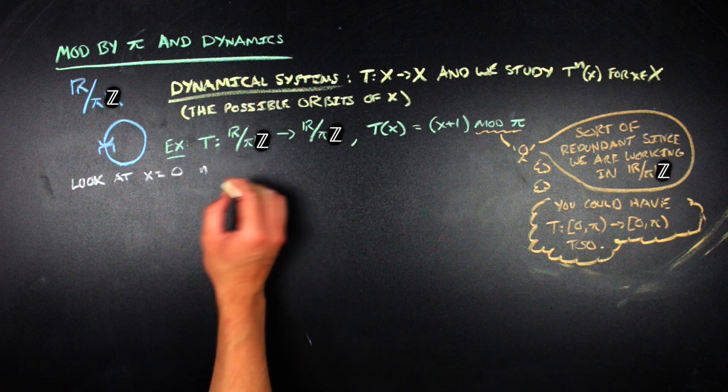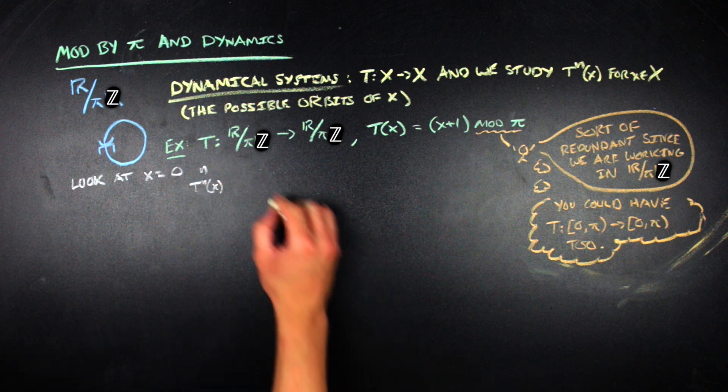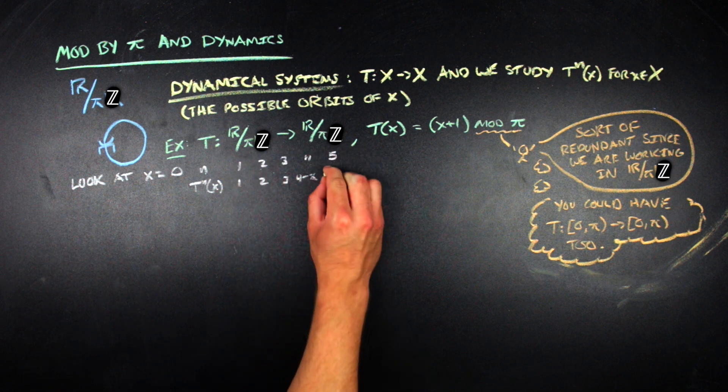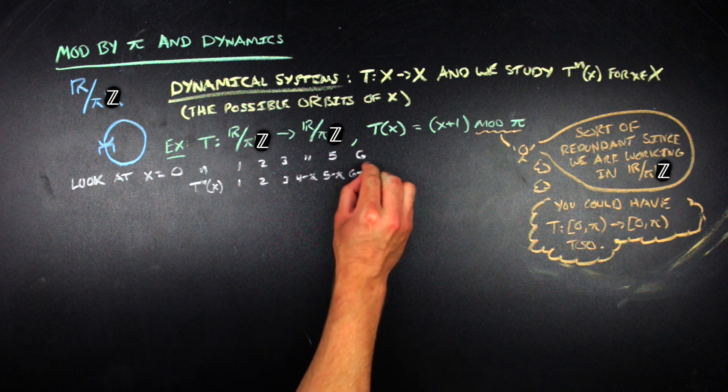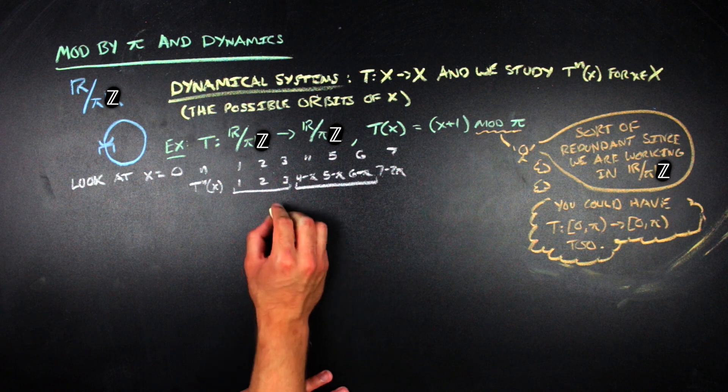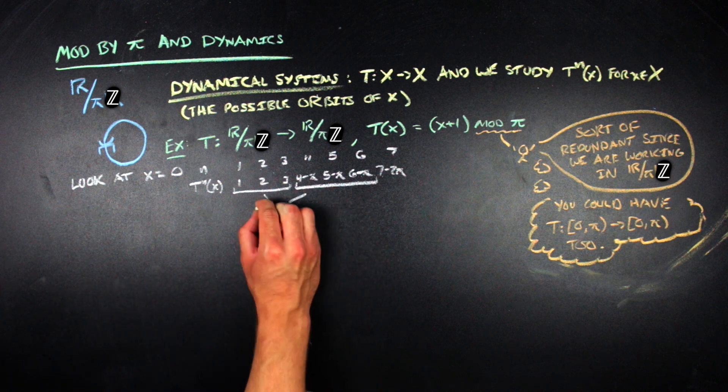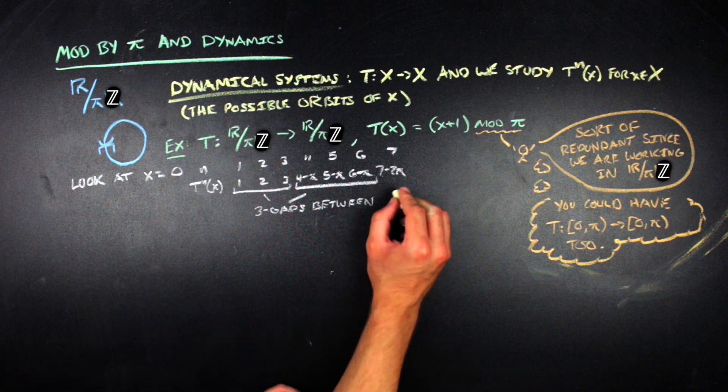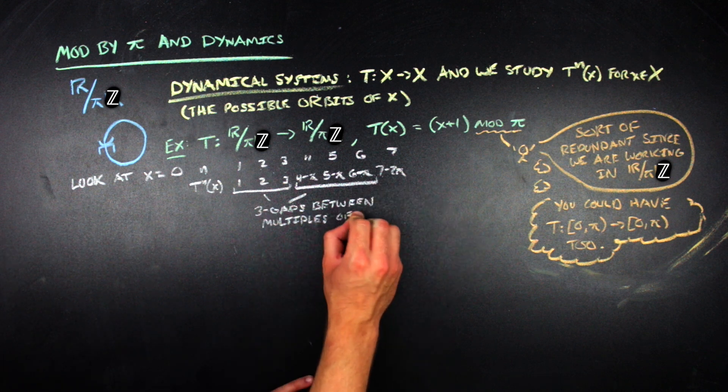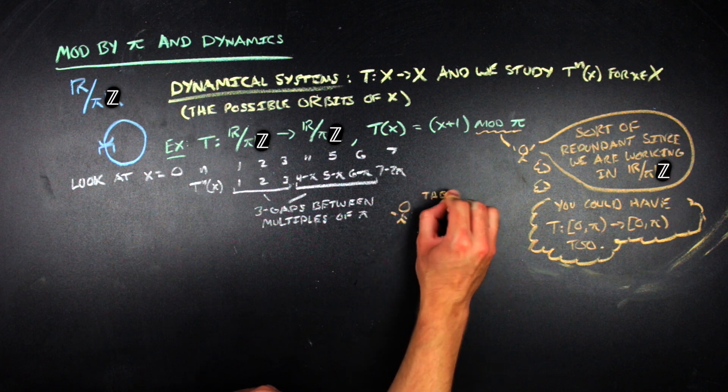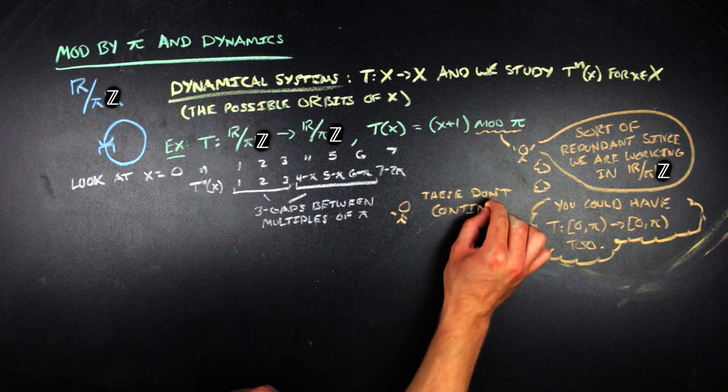And we're going to get stuff like the first time we'll get one, second time we'll get two, third time we'll get three, fourth time is the first time that we exceed pi. So we're going to get four minus pi, and then five will be five minus pi, six will be six minus pi, seven will be seven minus two pi, and it goes on. Now, you might be tempted to say that, oh, there are three cycles or three gaps that are in between these multiples of pi, and somehow that must continue throughout the system, or you might want to investigate if that does, and I can tell you for a fact that it doesn't.